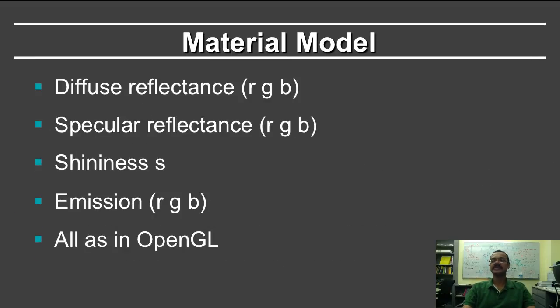Then you have the model for the materials. So you have the diffuse reflectance, which is the RGB colors, the specular reflectance, which is RGB, the shininess of the material, which is S, the emission RGB. All of these are essentially the same as in HW2 as in OpenGL.